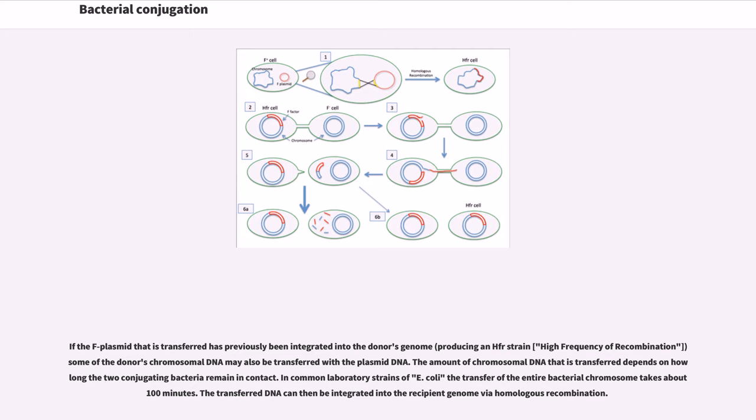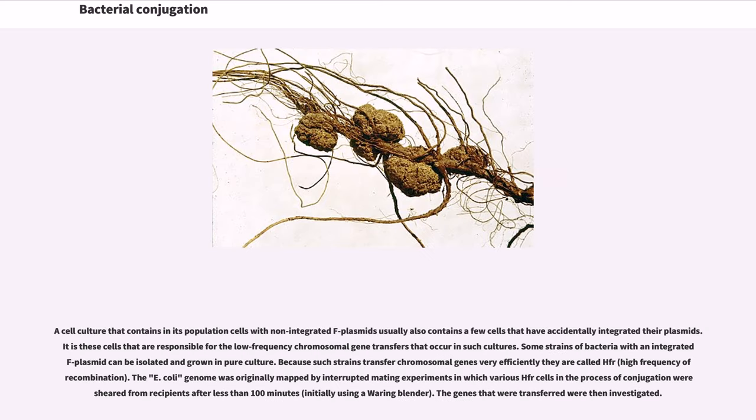The transferred DNA can then be integrated into the recipient genome by homologous recombination. A cell culture that contains in its population cells with non-integrated F plasmids usually also contains a few cells that have accidentally integrated their plasmids. It is these cells that are responsible for the low frequency chromosomal gene transfers that occur in such cultures. Some strains of bacteria with an integrated F plasmid can be isolated and grown in pure culture. Because such strains transfer chromosomal genes very efficiently, they are called Hfr, high frequency of recombination.